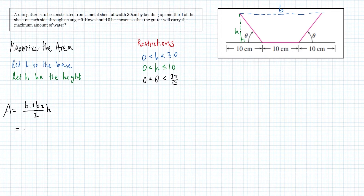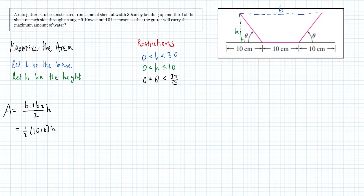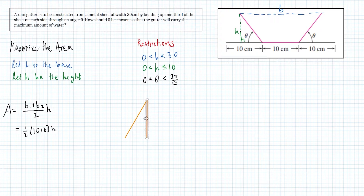We have the trapezoid area formula, and if we plug in our known b value we get this expression. We want to make it so that we only have one variable, so our constraint for that is going to be the right angle triangle that is created by the sides.